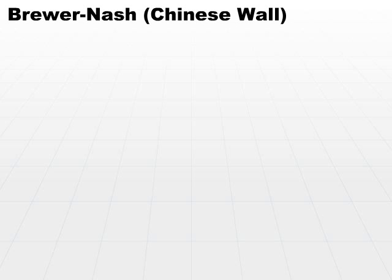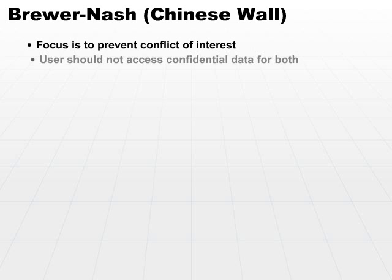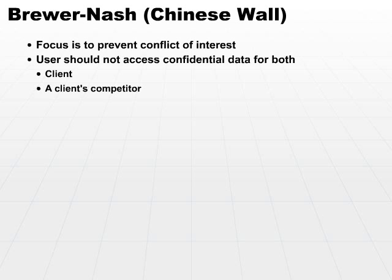The Brewer-Nash model, also called the Chinese Wall model, has a unique focus, and that is the focus to prevent conflict of interest. The central concept is that a user should not be able to access confidential data for both a client and a client's competitor.